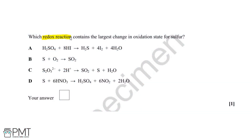Which redox reaction contains the largest change in oxidation state for sulfur? We've got four different equations below, so let's work out the oxidation states for the sulfur in each of these equations. Starting with equation A,